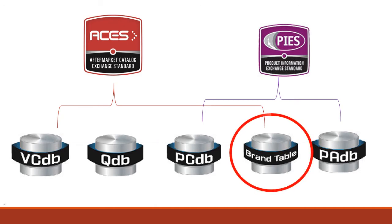The final database that supports ACEs is the brand table. This allows each trading partner to have their own identification in a coded format that's easily consumed by computer systems. It gives us brand and parent company relationships so that they're consistently identified. The PCDB and the brand table overlap with the PIES data as well, meaning that data from those two databases is usable both in the ACEs standard as well as the PIES standard.